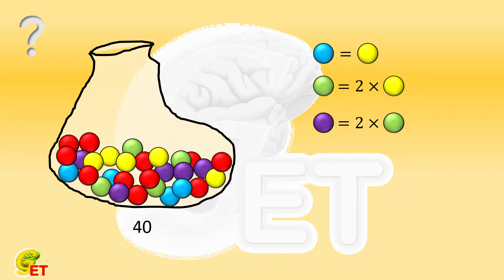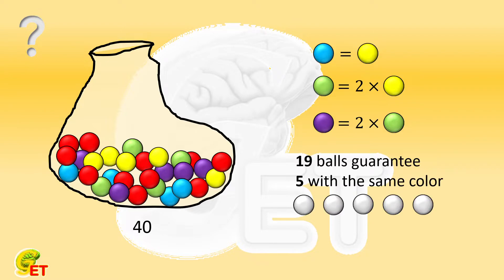In addition, if we grasp some balls randomly, we need to grasp at least 19 balls such that there are at least 5 balls of the same color. Grasping 18 balls does not guarantee that.